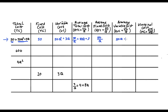Lastly, to find our marginal cost we take the derivative of our total cost function. The 50 drops out, 2 multiplies to 50, we take 1 off each of the exponents, and we're left with 100Q + 3. If taking the derivative is confusing, I'll link to a video focused on introductory calculus for economics students and hopefully that will help. So that's our first example done.